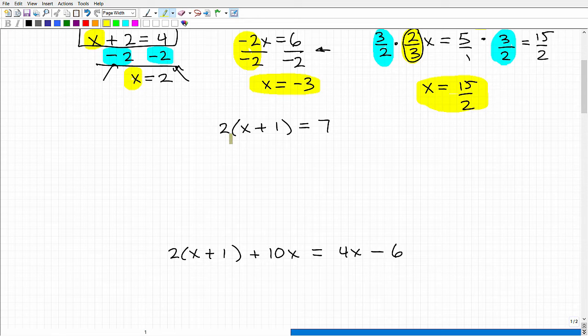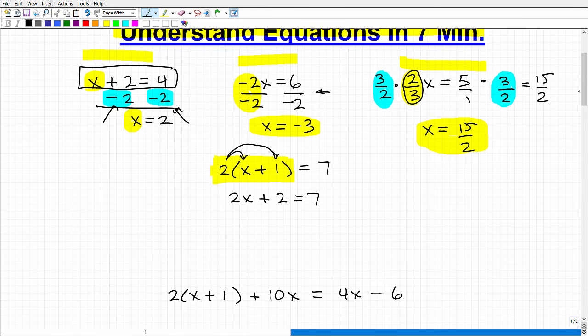All right. So what about an equation like this? All right. 2 times x plus 1 equals 7. Well, in algebra, anytime you see parentheses like so, this is an indication that you have to do the distributive property before you do anything else. So let's go ahead and do that now. So this is going to be 2 times x or 2x plus 2 times 1. All right. So that's going to be 2 equals 7. All right. Now, this is a multi-step equation. Remember, anytime you see parentheses, you're going to have to go ahead and apply the distributive property when necessary.